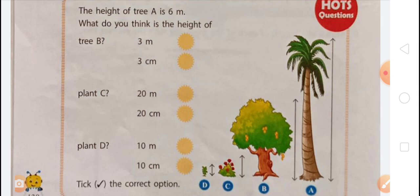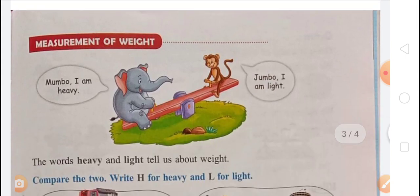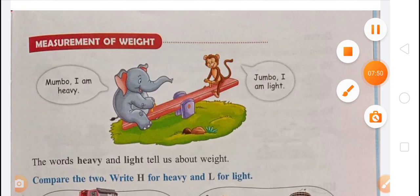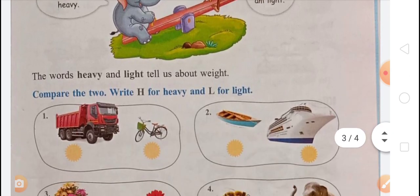Now the next topic is measurement of weight. Mambo said 'I am heavy' and Jumbo said 'I am light.' The words heavy and light tell us about weight. The next exercise asks you to compare two objects and write H for heavy and L for light.